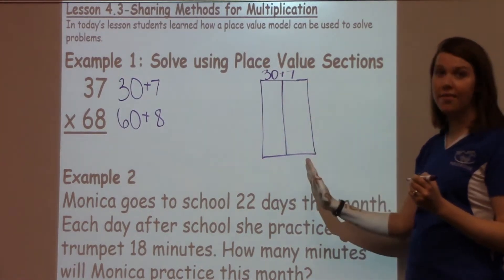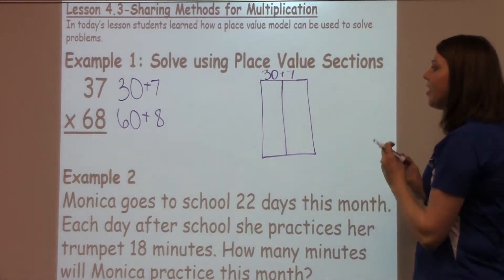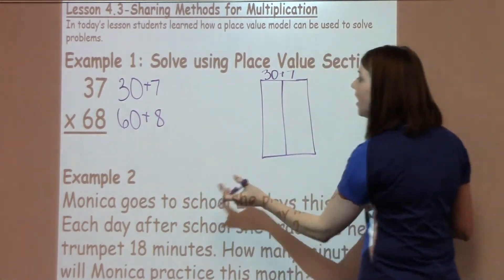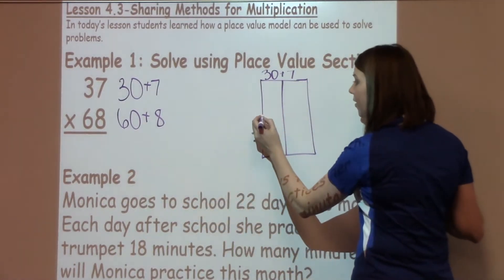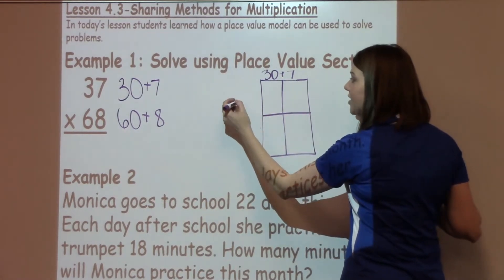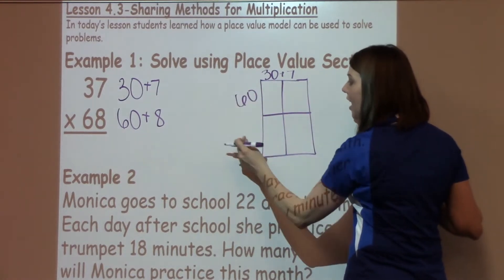Now the next thing I'm going to do is go to my 68, or my 60 plus 8. I'm going to divide my box again, and I'm going to write 60 on the top, and then 8 on the bottom.